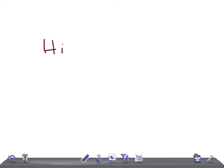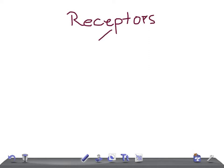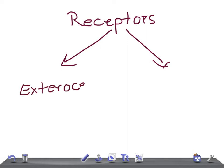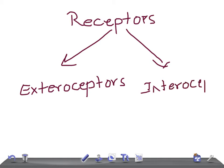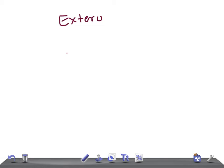Hi friends, welcome back to All in Law. This is a physiological medical video lecture on the All in Law channel. Today I'm going to talk about the classification of receptors — specifically exteroceptors. As you know, receptors are divided into two types: exteroceptors and interoceptors.